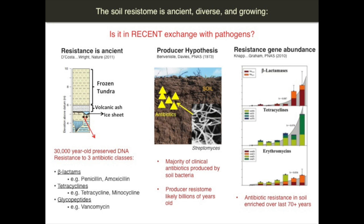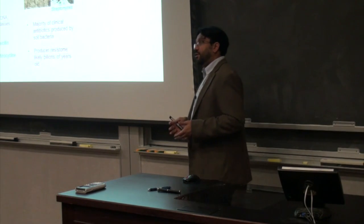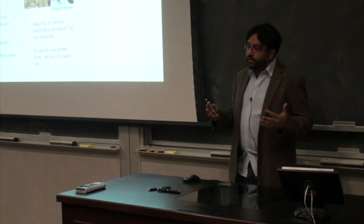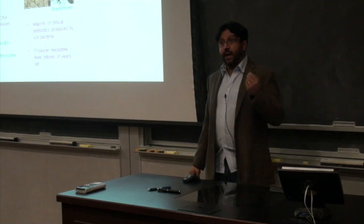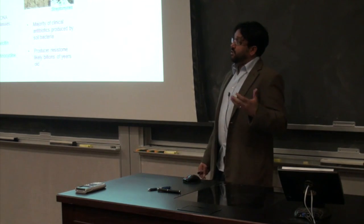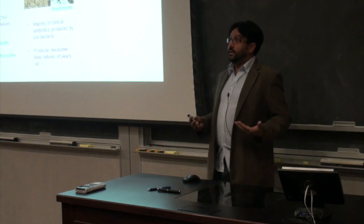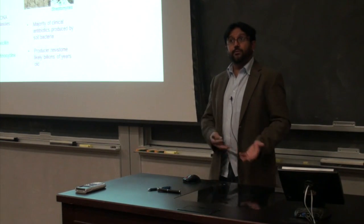One is that resistance in the soil has actually been shown to be ancient. In one particular study, researchers went to the Canadian Beringian permafrost, cored down to material dated to 30,000 years, and shotgun-sequenced the DNA there. In that 30,000-year-old DNA, they found antibiotic resistance genes, clearly showing that antibiotic resistance in bacteria existed well before any therapeutic use. About 40 years ago, Julian Davies and colleagues posited that most antibiotic chemicals we use in the clinic are actually natural products — bacteria in the soil make these compounds, which we over-express and use clinically. It makes sense that if these bacteria have been in the soil for millions to billions of years making these drugs, they have self-immunity elements to resist them. The producers have the resistance genes and may be the original progenitors of resistance.